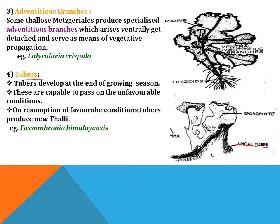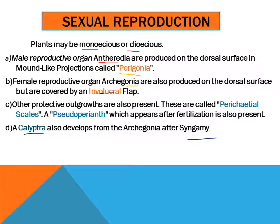Sexual reproduction: the plants may be monoecious or dioecious on the basis of the presence of sex organs. The male reproductive organs, antheridia, are produced on the dorsal surface of mound-like projections called androecia, and the female reproductive organs, archegonia, are also present on the dorsal surface but are covered by an involucral flap.